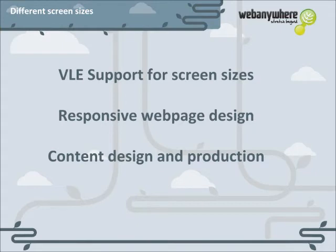The way materials and activities are designed, constructed and produced needs to take into account how they will be accessed. For example, documents saved in Word and PDF are going to be more difficult to view on a small screen without some manipulation, and video streaming will quickly eat through a data allowance on a mobile connection.